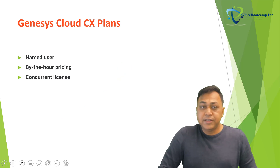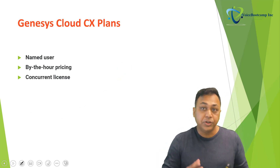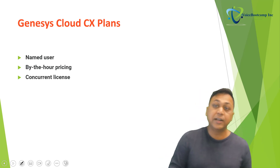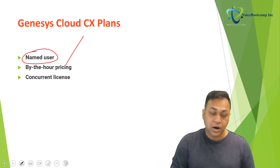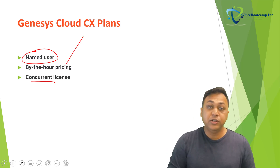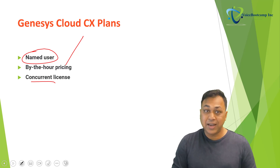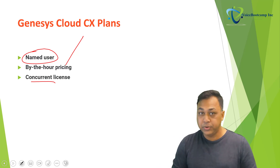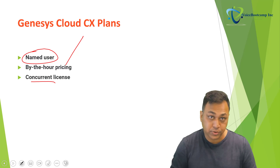For the Genesis Cloud CX plan, the following are some of the plan options available. You can select the option that best suits your business needs. You can get a plan based on named user, by-the-hour pricing, or concurrent licensing. A billable named user is anyone who has logged into Genesis Cloud service at least once during a billing period, and the user type billed is the highest level license they were assigned during the billing period.